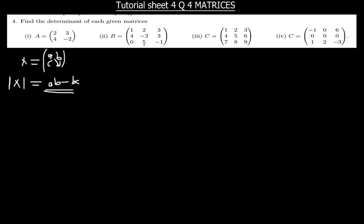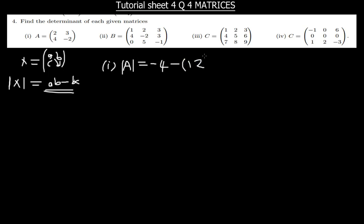Now, having known this, let's try to find the determinant of part (i), which is matrix A. The determinant of A is going to be equal to: you multiply 2 times negative 2, you get negative 4. Then minus 4 times 3 — you open brackets and 4 times 3 gives you 12. So you simplify negative 4 minus 12.